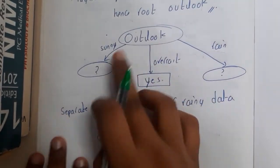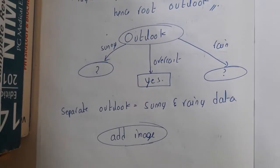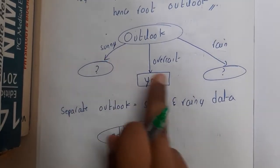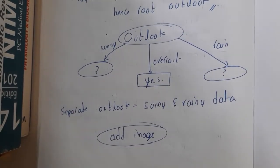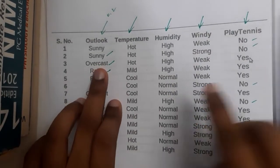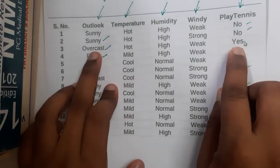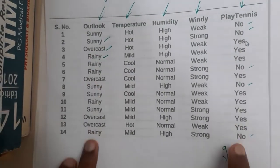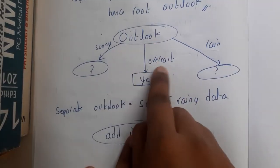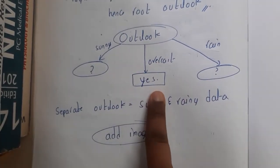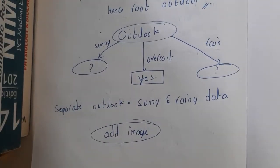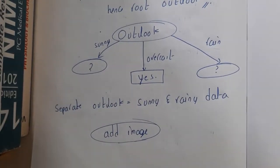Outlook is the root and it has three options: sunny, overcast, and rainy. Observing the overcast entries — they are always yes. So we can directly say that if it is overcast, the result is yes. Now we are left with sunny and rainy, which have some combinations to check further.